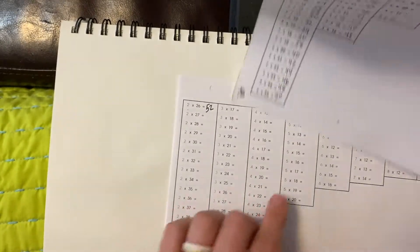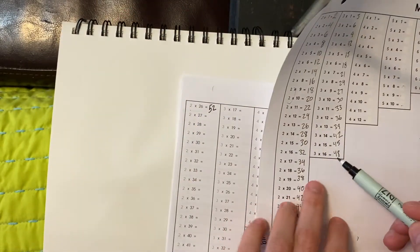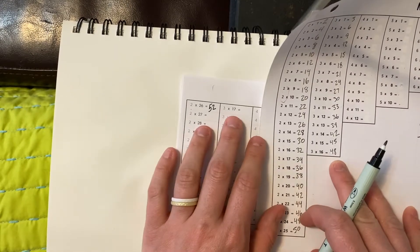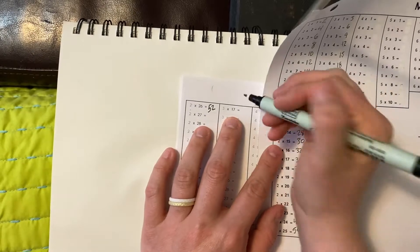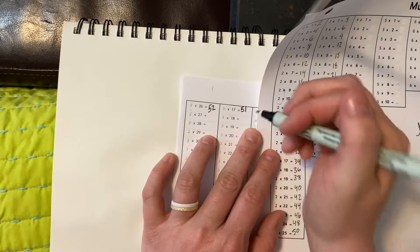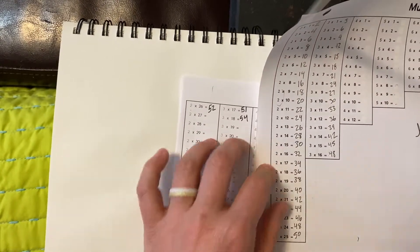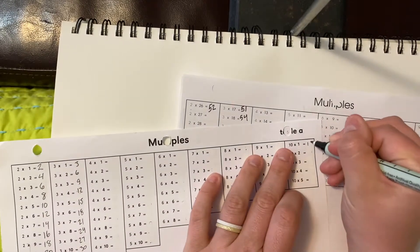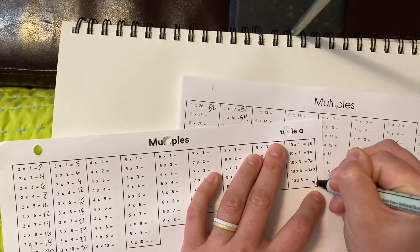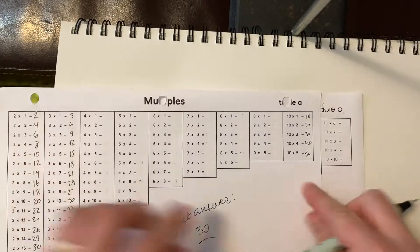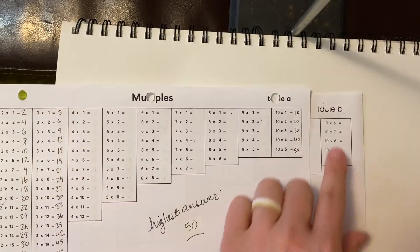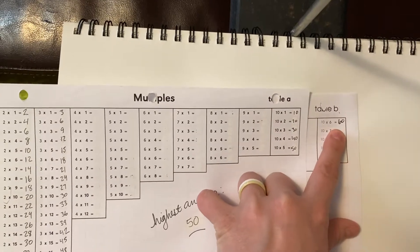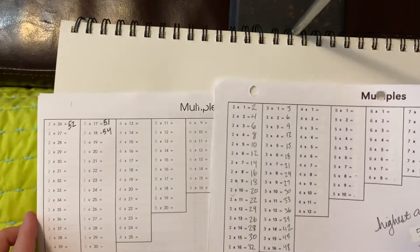This is going to be the same thing with your threes. The last three here was 3 times 16, which was 48. So 3 times 17, we're just going to add another 3 to 48, which would be 51. Having your filled in table A up here is going to really help you. So that's table A and table B.